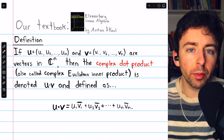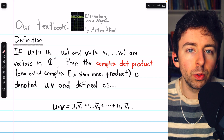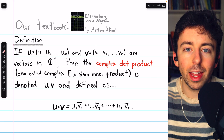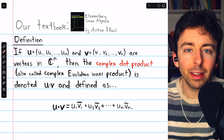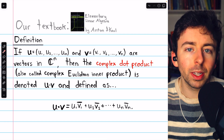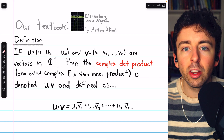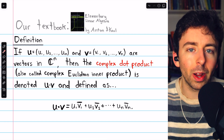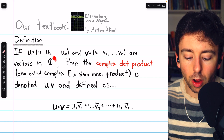In this video, we'll define the complex dot product, see how it's used to define the magnitude or norm of a vector in complex n-space, we'll see some of the properties of the complex dot product, and of course do a handful of examples. Chapters are in the description if you want to skip around the video.